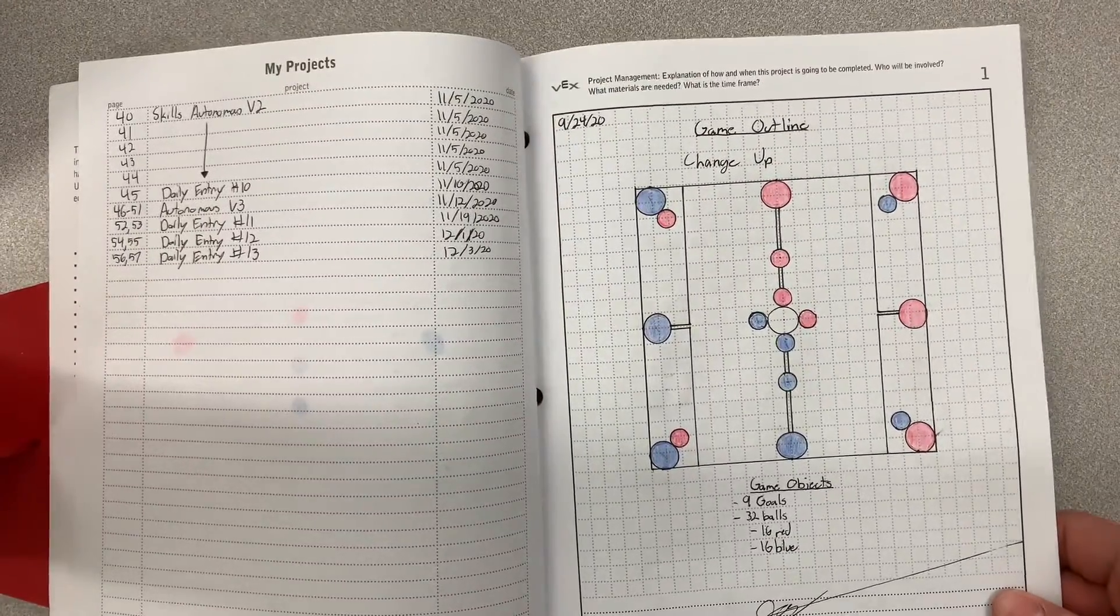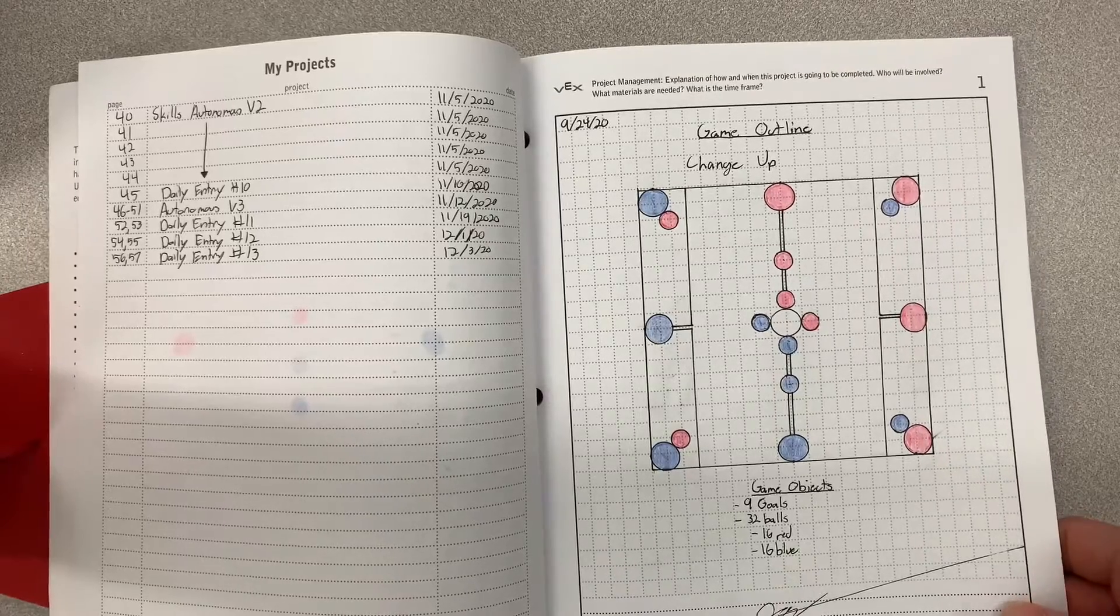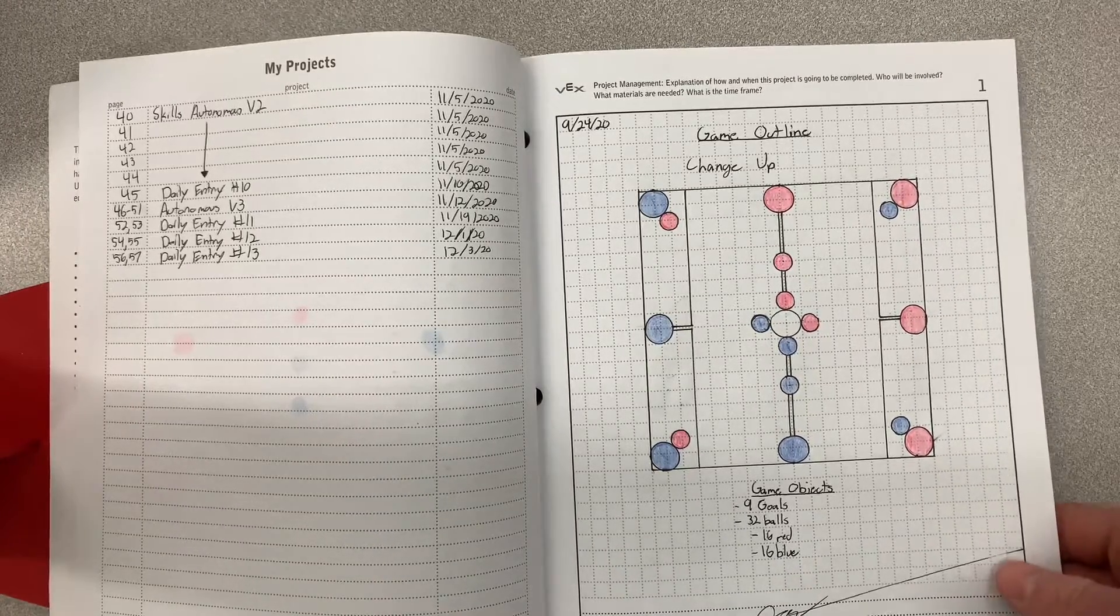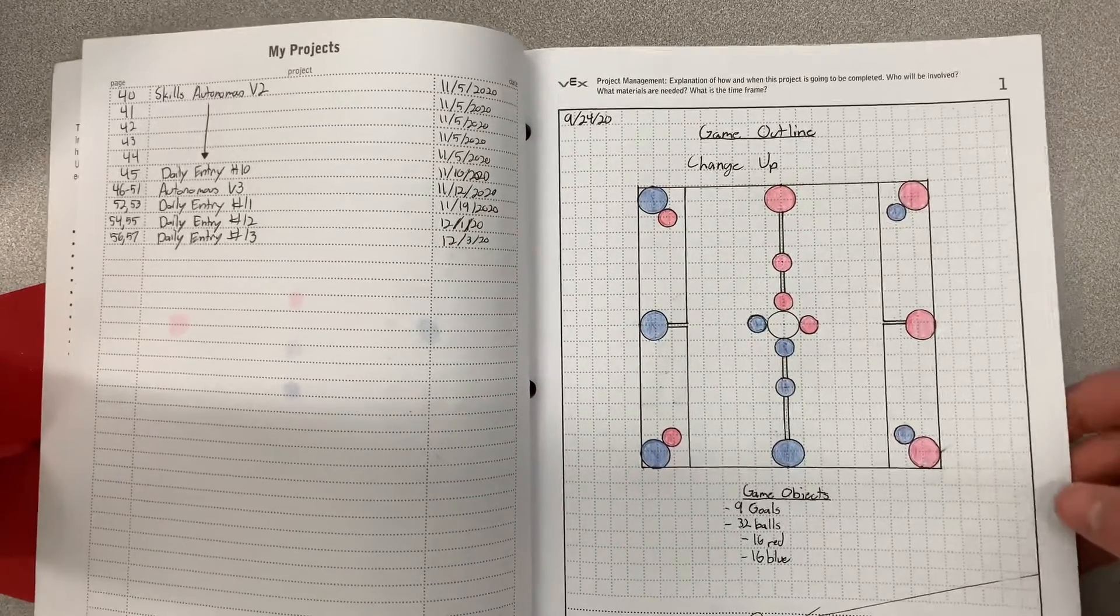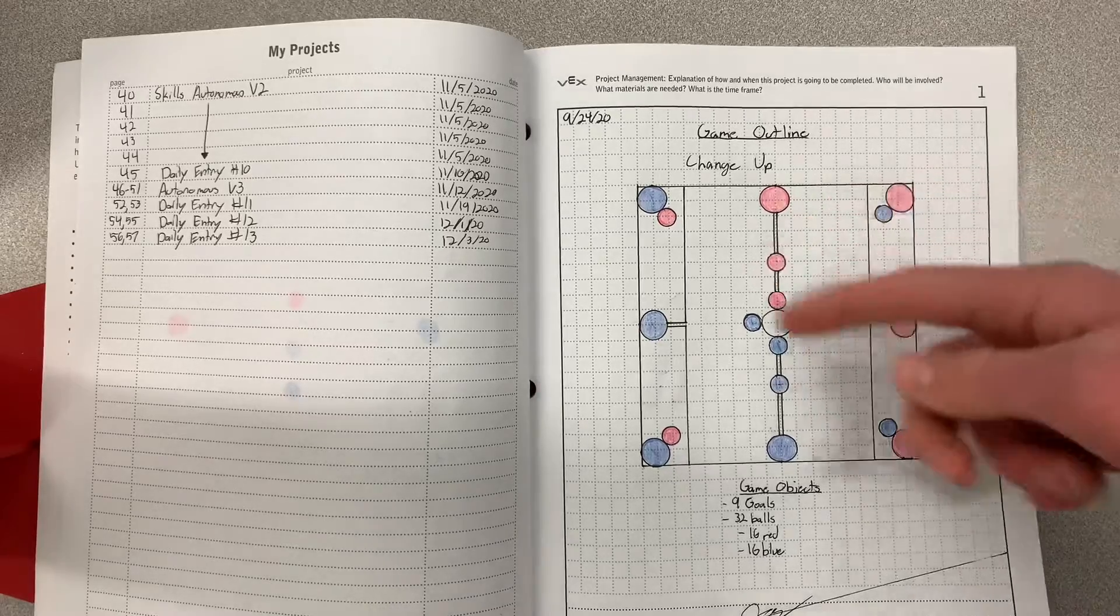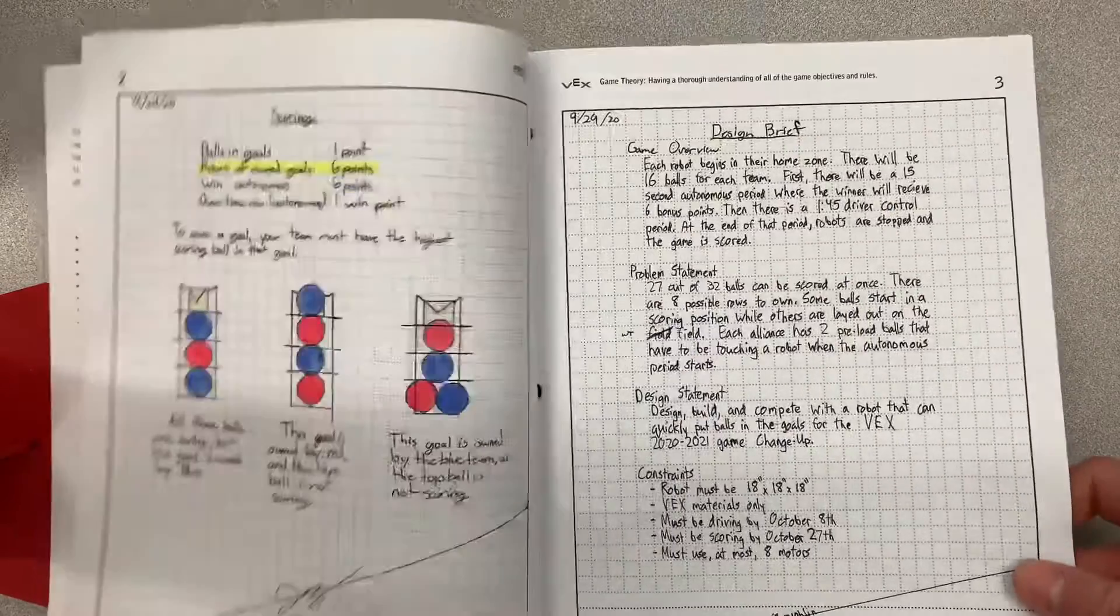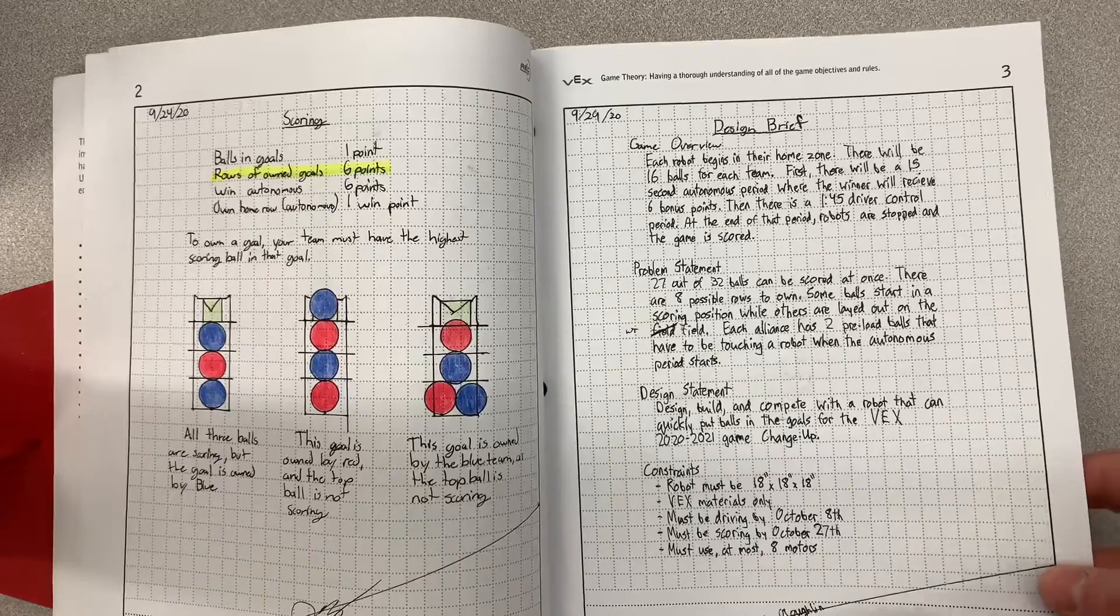Alright, next are the qualities of our notebook that make it so good. We add lots of sketches first, and you want to add color to make sure that they stand out from the black and white of your writing.